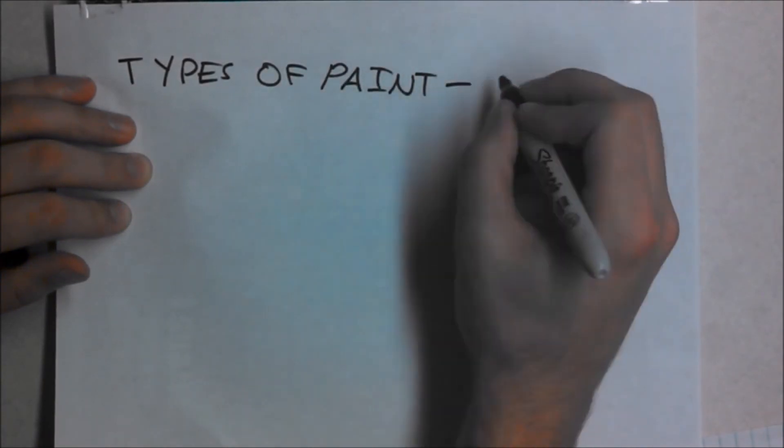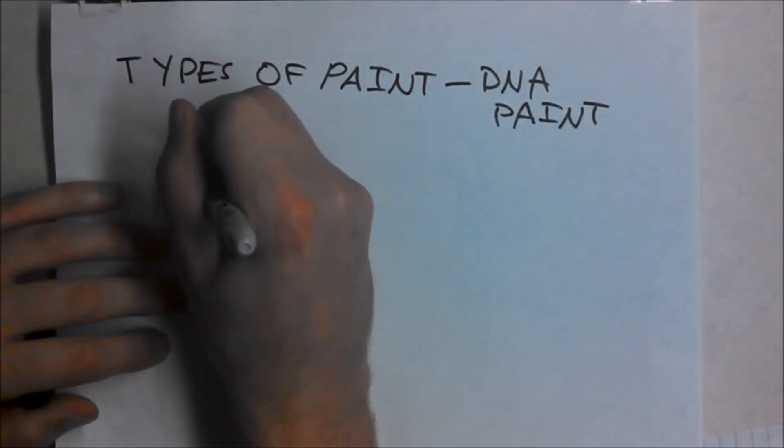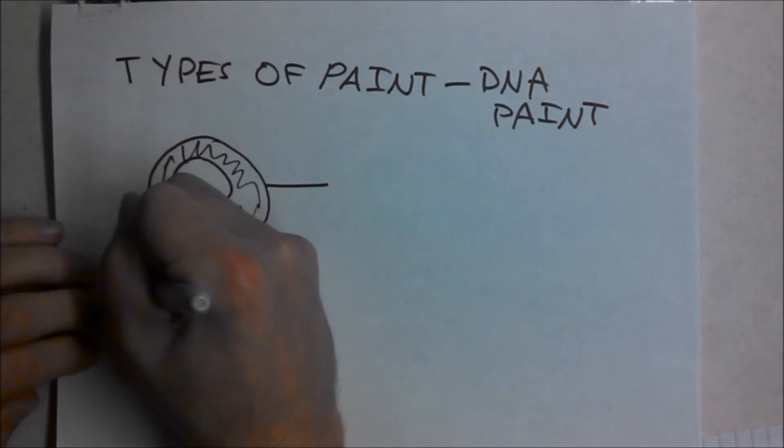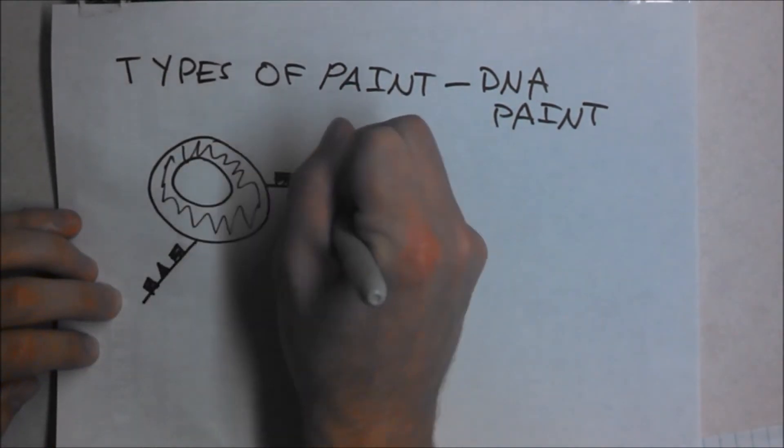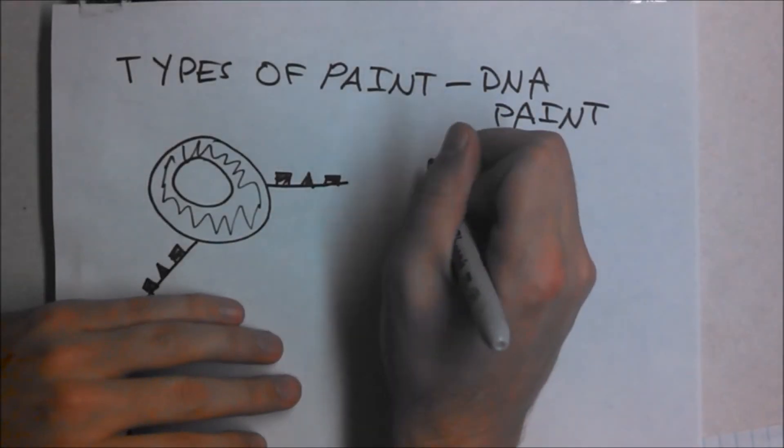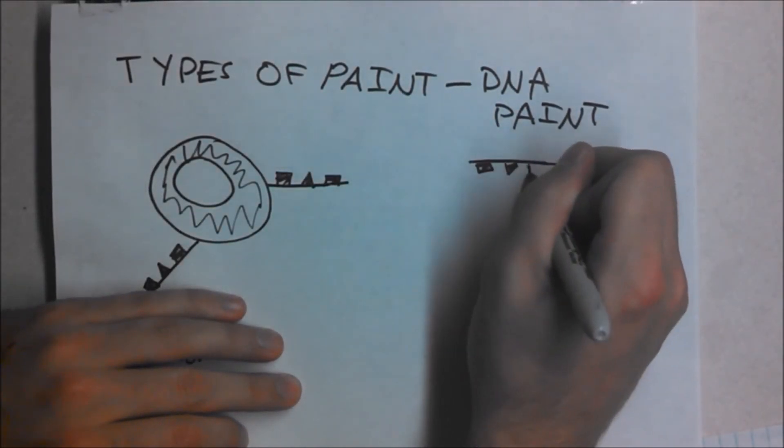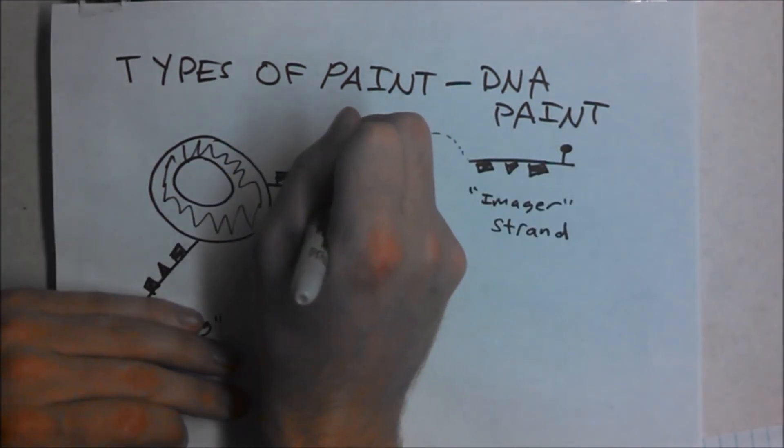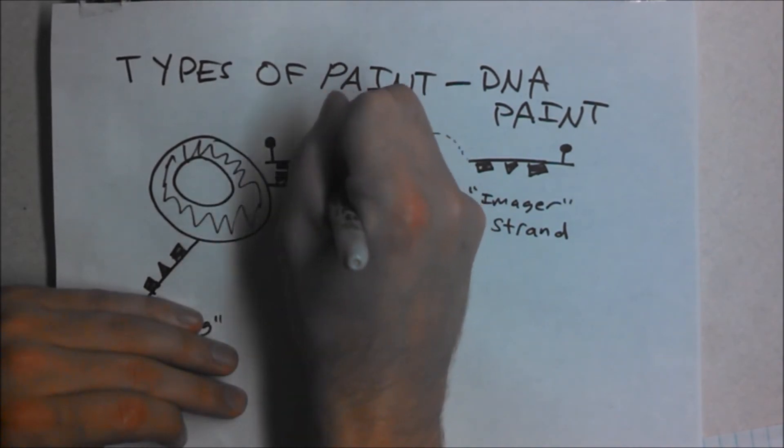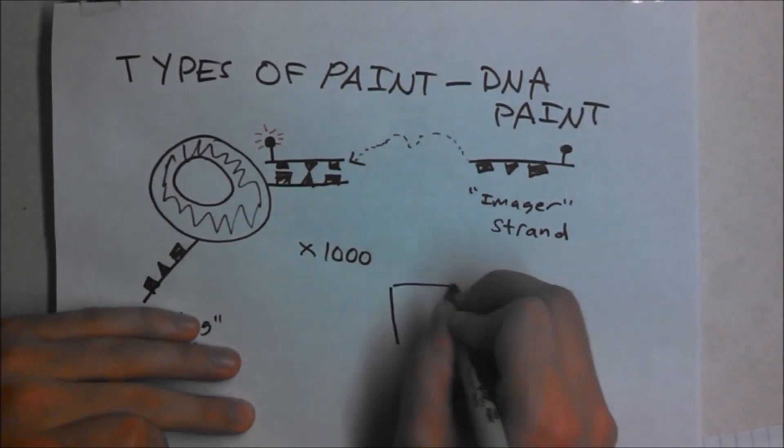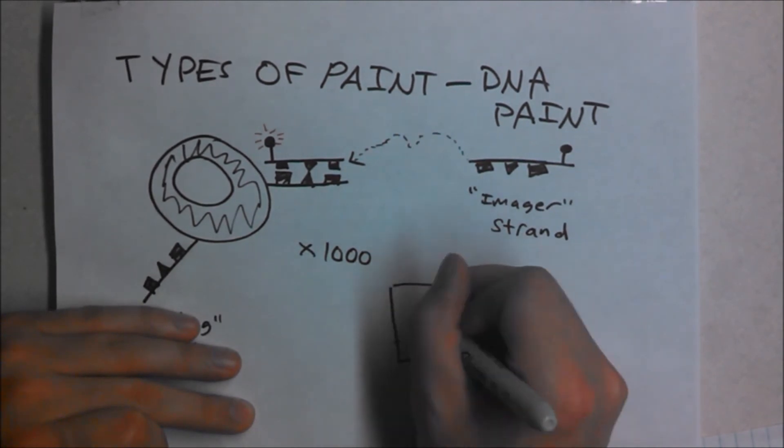DNA-PAINT is a variation of PAINT that uses dye-labeled DNA to measure interactions between DNA strands. Nanostructures can be built out of DNA. Docking strands with a specific DNA sequence can be built into these structures. An imager strand of complementary DNA labeled with a dye molecule can temporarily bind to the docking strand and fluoresce. This fluorescence is used to create a super-resolution image of the DNA structure.